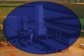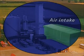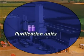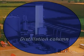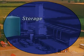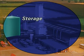On this site, air is drawn in and compressed at this point. The air is cleaned, and after further compression it is fed into the distillation column as a liquid. The liquid air products are stored on the site before delivery to customers.